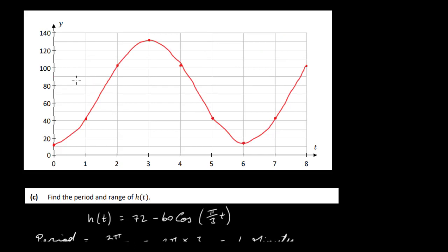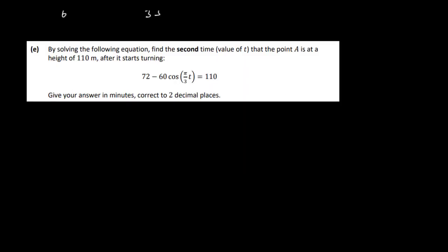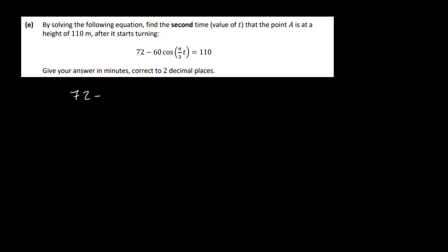Looking at the graph, 110 meters corresponds to two times: the first is around t ≈ 2.something and the second is around t ≈ 3.8 or 3.9. We solve 72 − 60 cos(π/3 · t) = 110.